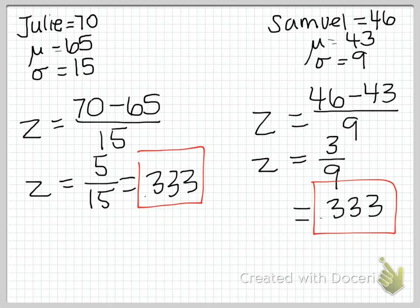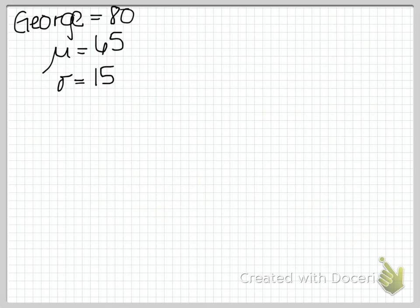Next we'll work on George who got a score of 80 in Julie's class and we want to know what the equivalent score would be in Samuel's class. So I'll go ahead and copy that information down to work on that problem. So here I have George's score which is an 80 and I have the same mean and standard deviation as I did for Julie because he's in her class. So that's the distribution that he's a part of.